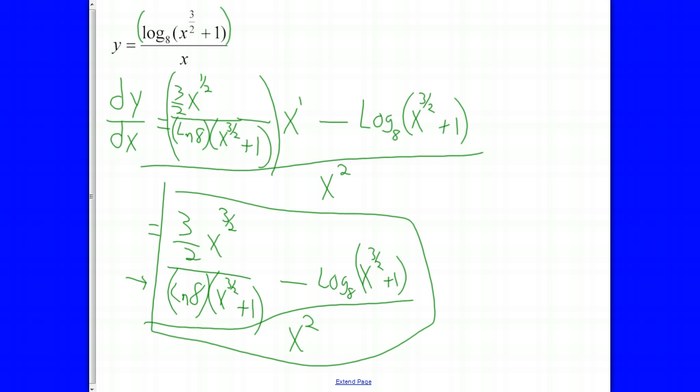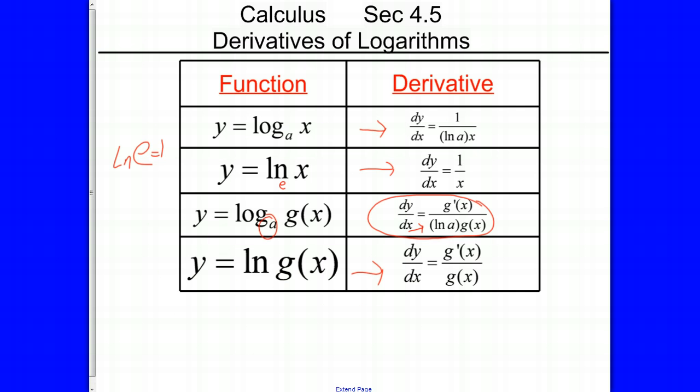That is all the examples — finding the derivative of logarithmic functions. Again, the general formula is the most important and most useful. Instead of memorizing all four forms, if you know that one formula, you've got them all. That's it. Bye.